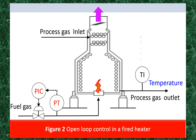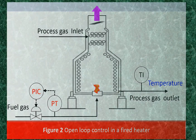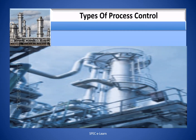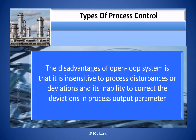The open loop control system is explained in this figure with the process fired heater, which is a furnace. The desired process variable is the process gas outlet temperature. The fuel gas pressure controller acts on the fuel gas pressure control valve to maintain the pressure of the fuel to the furnace. But it has no feedback signal coming to it from the process gas temperature measured at the outlet of the heater. The disadvantage of the open loop system is that it is insensitive to process disturbances or deviations, and its inability to correct deviations in the process output parameter.